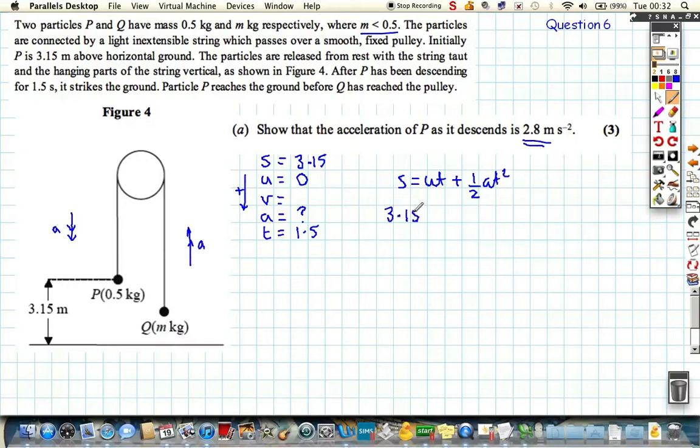Substituting our values, 3.15 is equal to 0 because U is 0, plus half of A, and T squared is 1.5 squared which is 2.25. So rearranging, 3.15 equals 1.125A, and dividing 3.15 by 1.125 gives us acceleration is 2.8 m/s², as required.